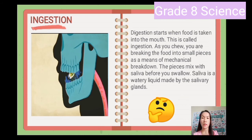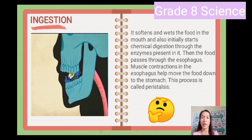The pieces mix with saliva before you swallow. Saliva is a watery liquid made by the saliva glands. Saliva softens and wets the food in the mouth and also initially starts chemical digestion through the enzymes present in it. Then the food passes through the esophagus — muscle contractions in the esophagus help move the food down to the stomach.